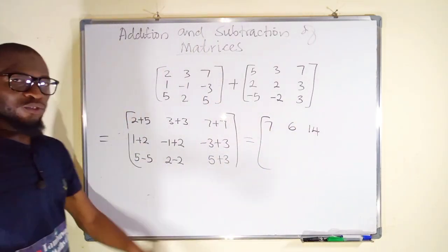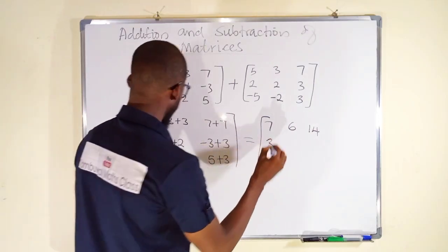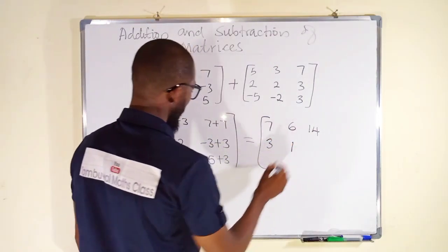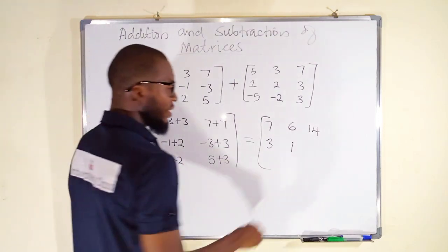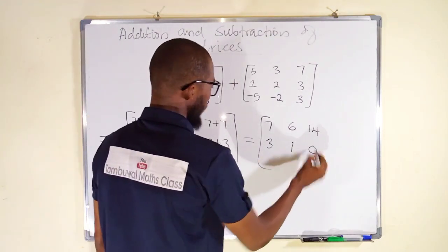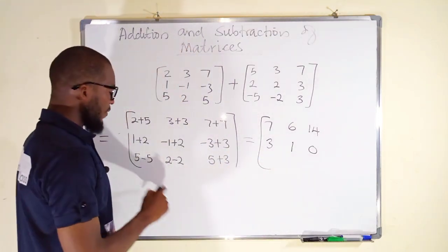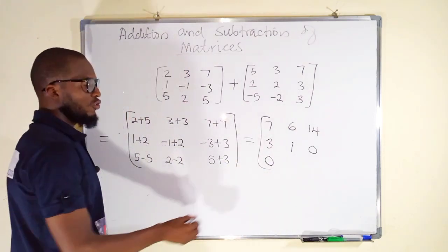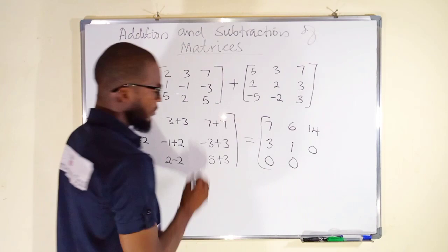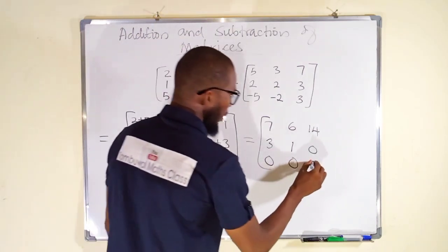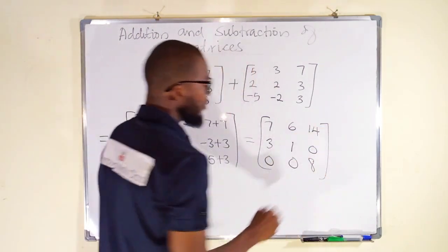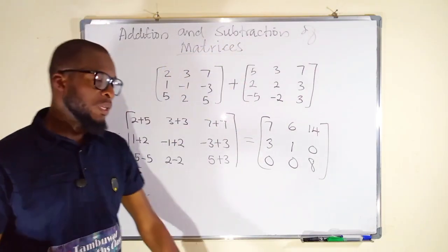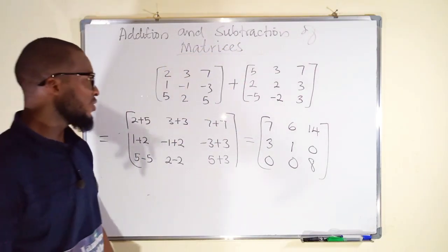Second row: one plus two is three. Negative one plus two is one. Negative three plus three is zero. Third row: five plus negative five is zero, two minus two is zero, five plus three is eight. So this is the result after adding these two matrices. Let us now look at subtraction.